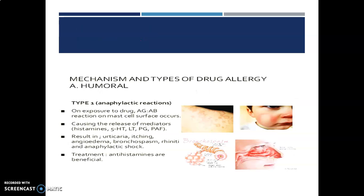Mechanism and types of drug allergy: first is humoral — Type 1 anaphylactic reactions. On exposure to the drug antigen, an antibody reaction on mast cell surfaces occurs, which leads to the release of mediators like histamine, 5-HT, leukotrienes, prostaglandins, and bradykinin. This results in urticaria, itching, angioedema, bronchospasms, rhinitis, and anaphylactic shock. Treatment is by giving antihistamines, which are beneficial in treating the allergy.